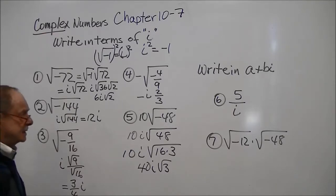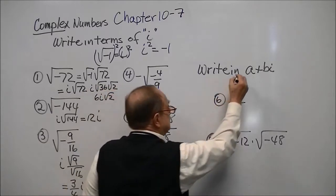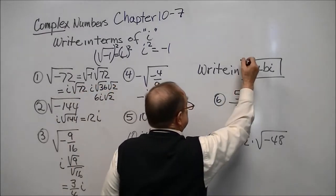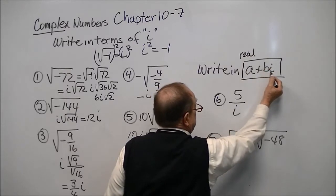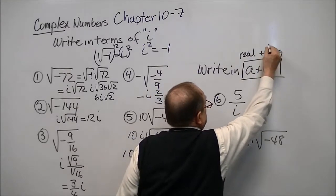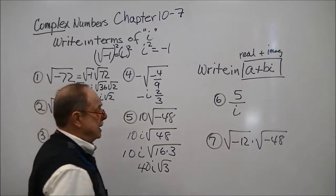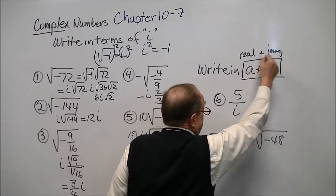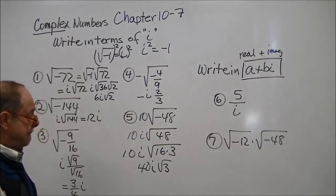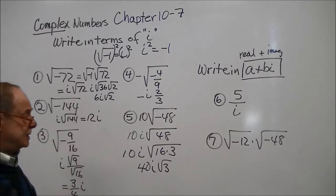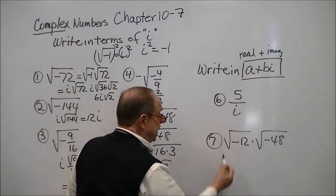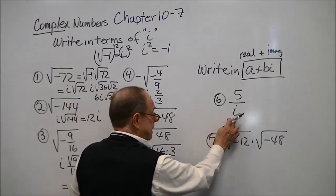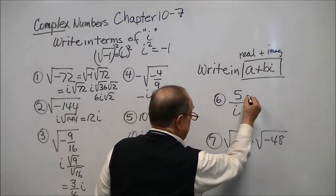Another important part of this lesson is to write these in what we call standard form of a complex number: a + bi, where a is the real number part and bi is the imaginary part. Here b is just a regular real number, but when it's attached to i, it's imaginary. Together in this form, it is a complex number. Just like rationalizing the denominator, we don't want to have i in the denominator, so we multiply by i's conjugate, which is negative i.